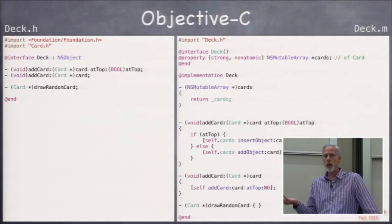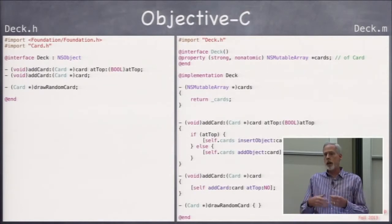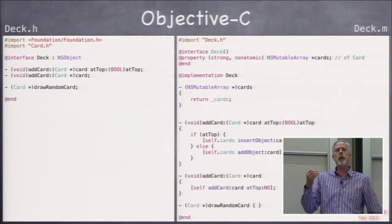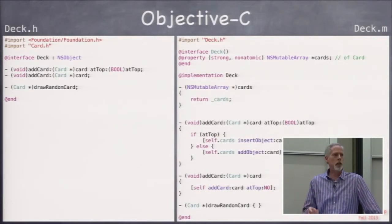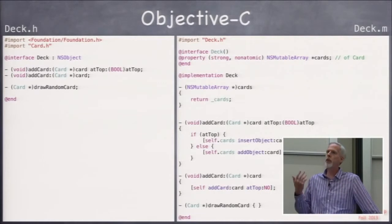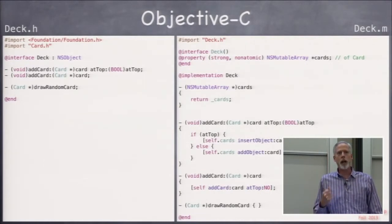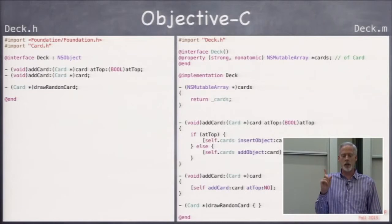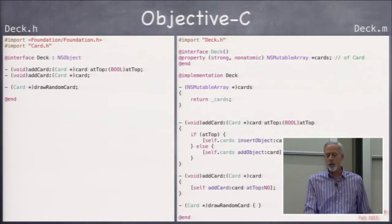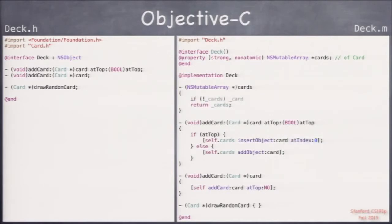How are we going to make it so that addCard works? We could put something at the beginning of addCard that says if self.cards is nil, then go allocate an array in the heap and point to it, and then we'll use it. But that would mean every single time we use self.cards, we'd have to check and make sure it's not nil, and that would be very annoying, very error prone. A great place to do that check is in the getter.